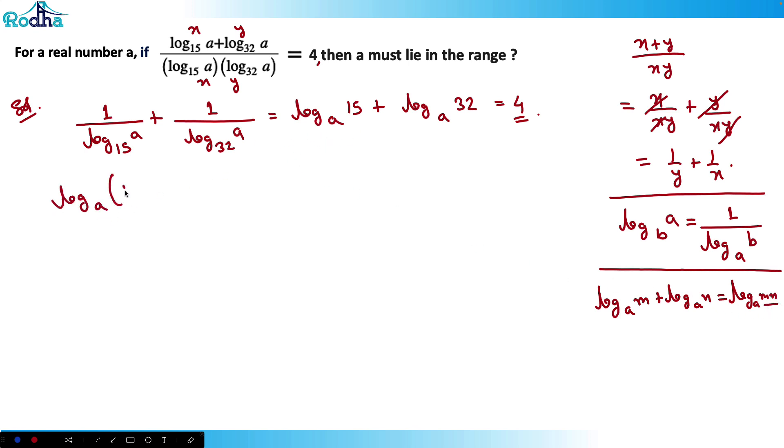So log_a(15 × 32) = 4. That means log_a(480) = 4. That means 480 is equal to a^4, that other property of log.